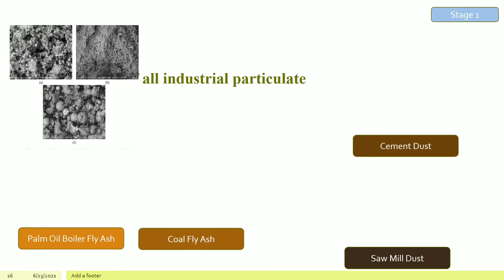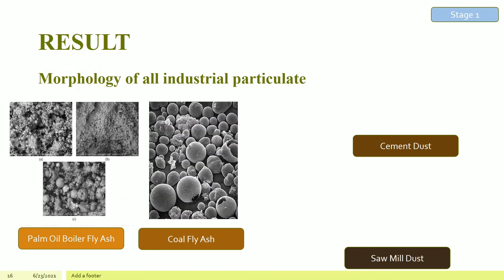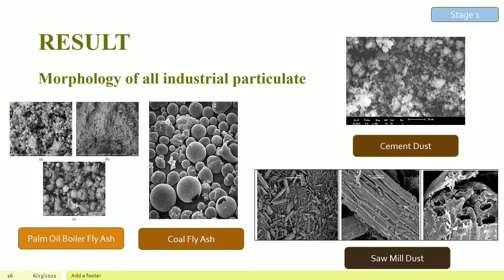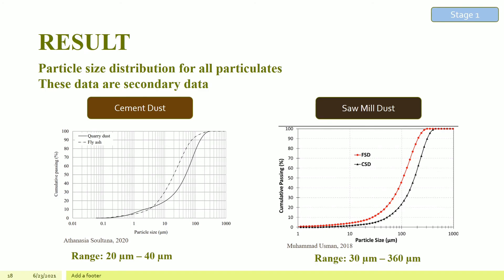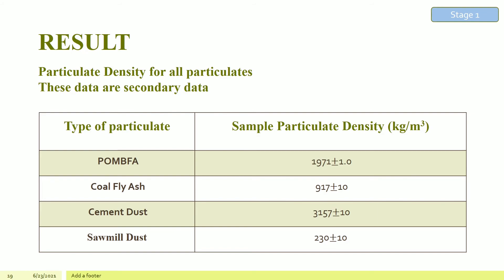The morphology of palm oil boiler fly ash, coal fly ash, cement dust and sawmill dust are secondary data extracted from different journals. The particle size distribution of different industrial particulates are secondary data extracted from different journals. Different industrial particulates have different ranges of particle size. The particulate density of all the particulates are also secondary data extracted from different journals. From the table, it can be observed that cement dust has the highest density, followed by BOMFA, coal fly ash and sawmill dust.